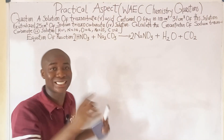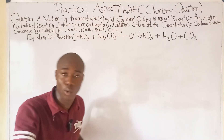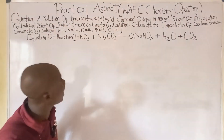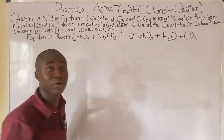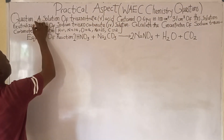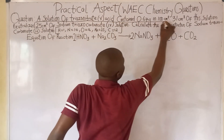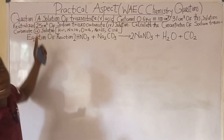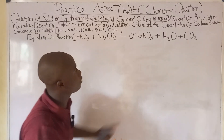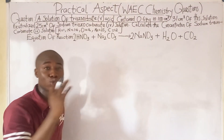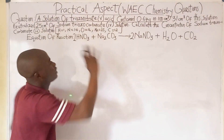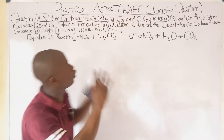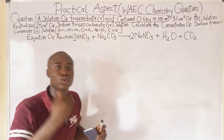The first thing we have to do is understand the question. We take the first part: a solution of trioxonitrate(V) acid contained 0.67 grams in 100 cm³. Then 31 cm³ of this solution neutralized 25 cm³ of sodium trioxocarbonate(IV). We must also note the atomic masses given and the equation for the reaction, because this question is on titration.